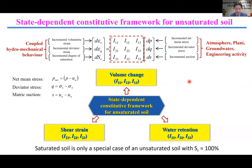According to the strain incremental stress equation shown here, the variables I1-1, I2-1, and I3-1 in the compliance matrix describe the behavior of unsaturated soil during compression. Similarly, I1-2, I2-2, and I3-2 describe the hydromechanical behavior during the shearing process. While I1-3, I2-3, and I3-3 can capture the behavior of soil subject to drying and wetting.